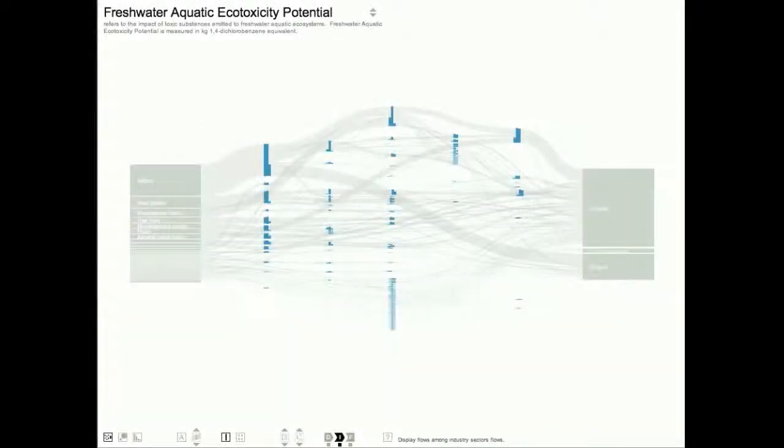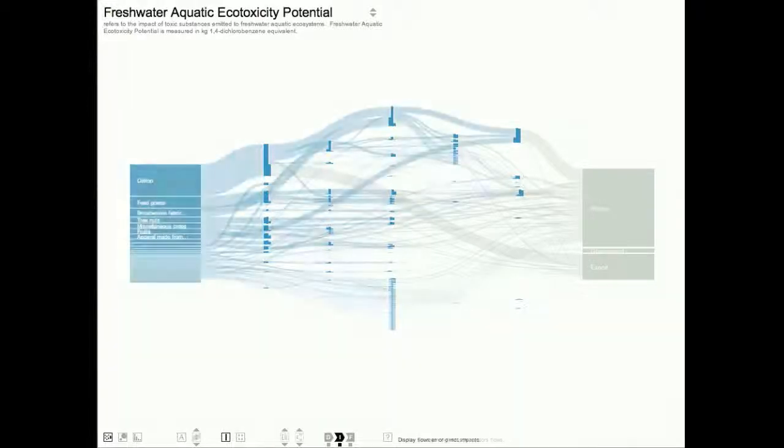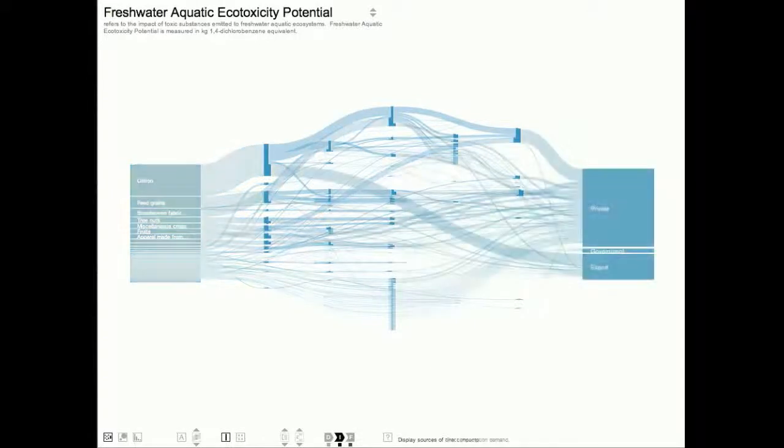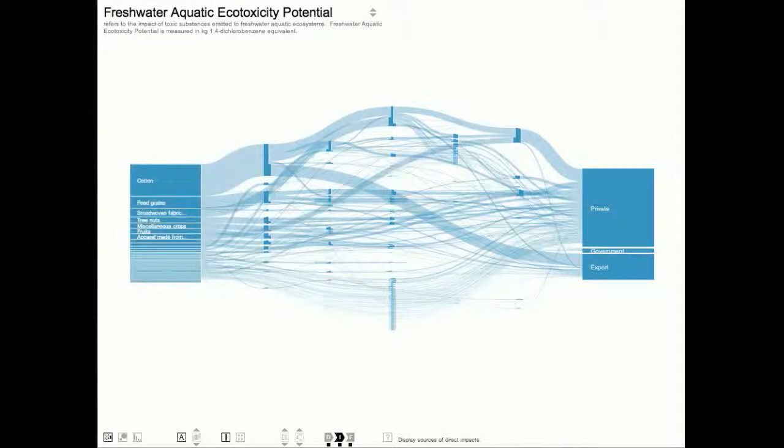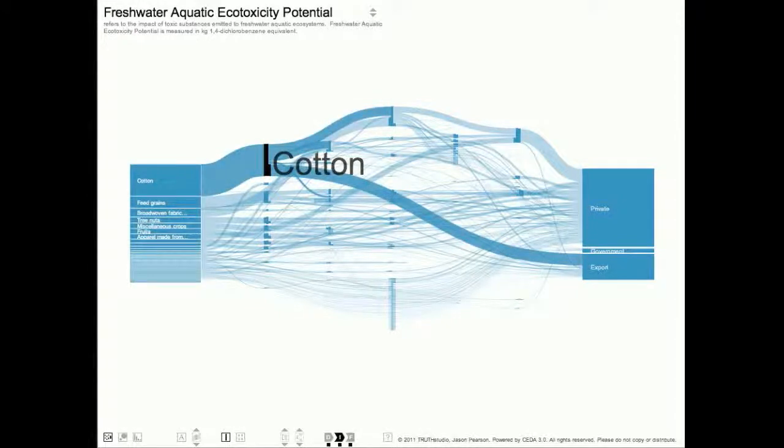In network mode, the economy is displayed as a network of flows showing, on the left hand, where in the economy impacts are generated, and on the right hand, where responsibility could be allocated for the final economic demand that causes those impacts. The network display mode is particularly useful for understanding how impacts flow along supply chains in the economy.